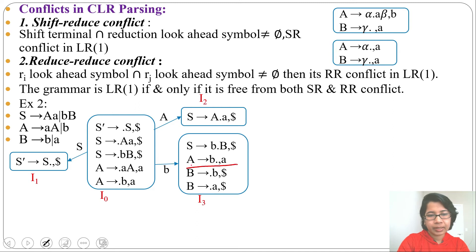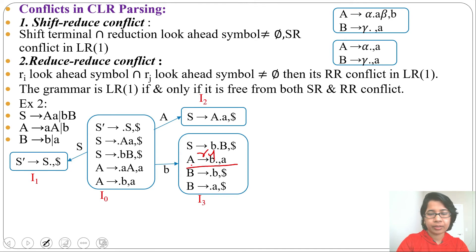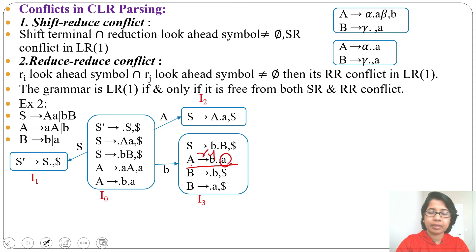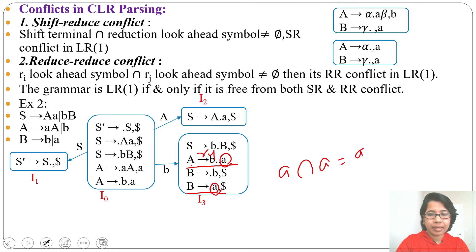Now observe that a reduction is present in i3 — specifically A → b· with lookahead a, which is reduction r4. Whenever a reduction is present, there is a chance of conflict. Check if any other reduction is present — no, just one, so an RR conflict is not possible. To check for an SR conflict, look at the lookahead symbol of the reduction: it is 'a'. Is there a shift on 'a'? Yes — B → ·a has a shift on 'a'. So the intersection of 'a' and 'a' is 'a', which is not φ. There is a shift-reduce conflict at state i3.